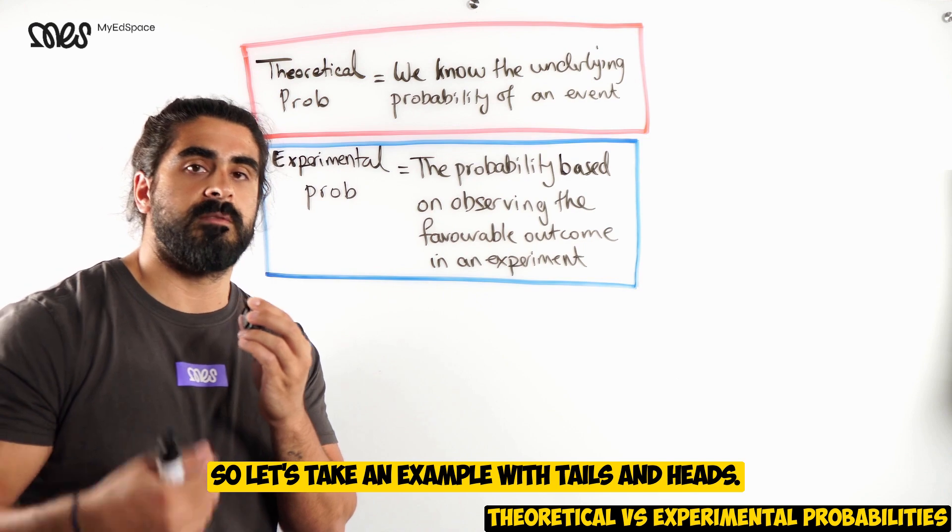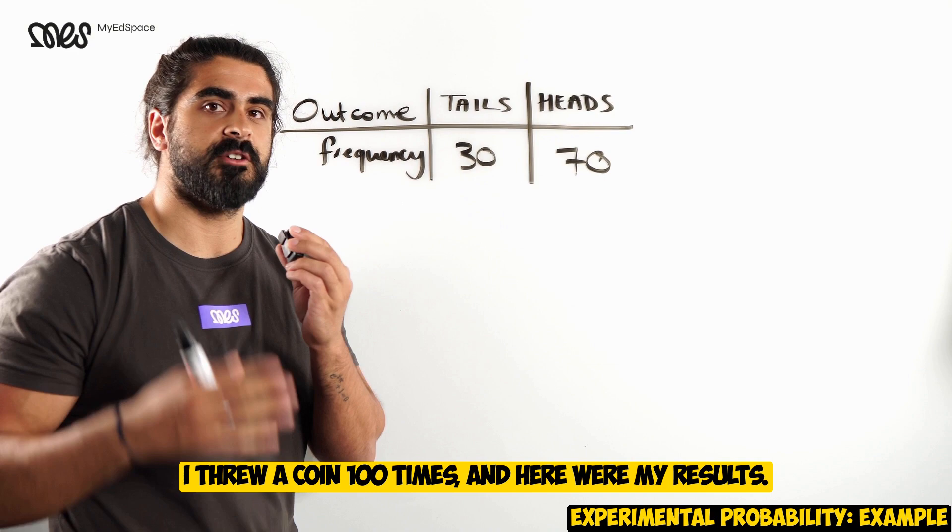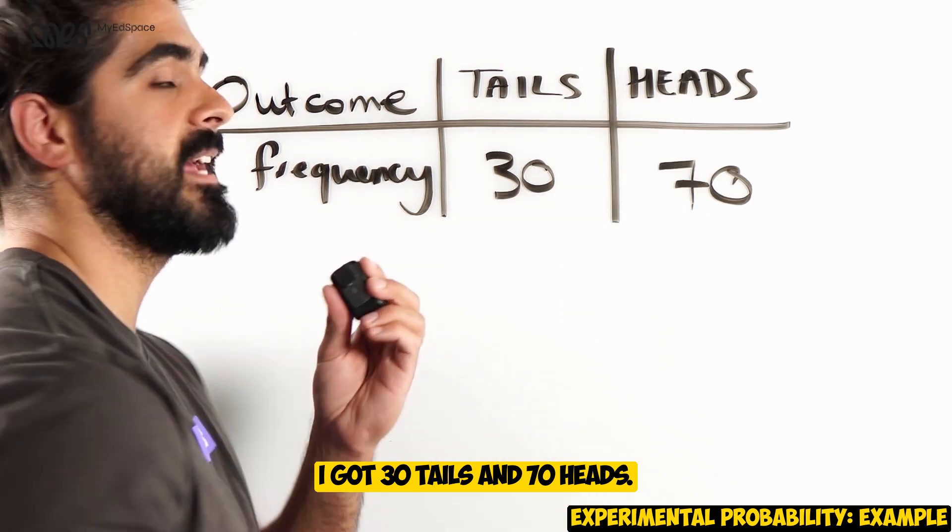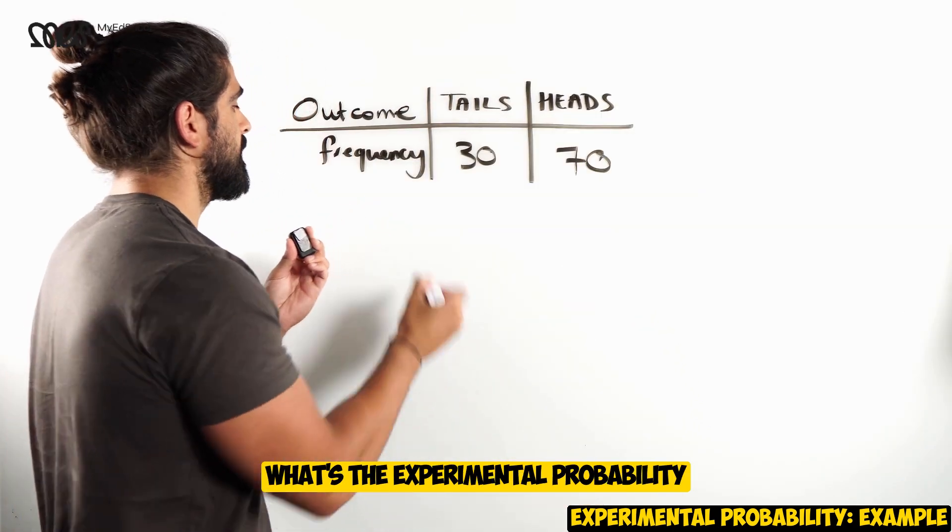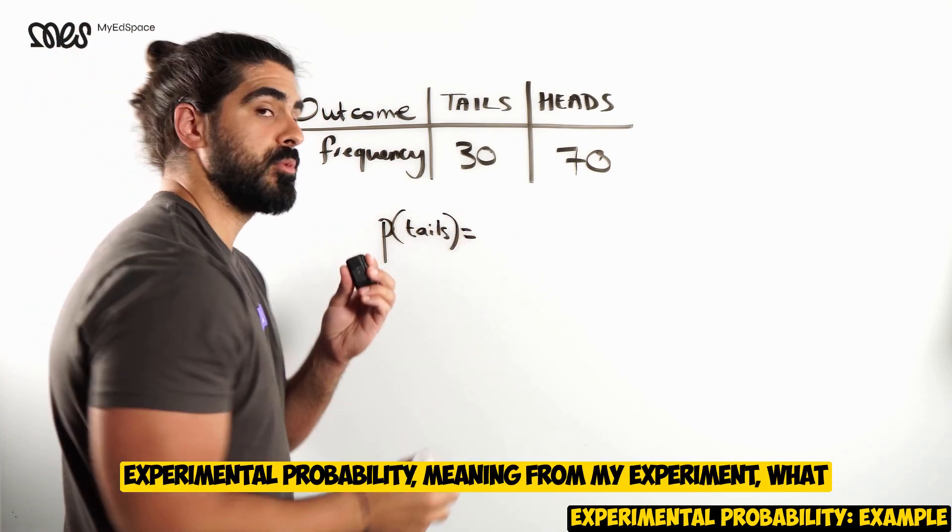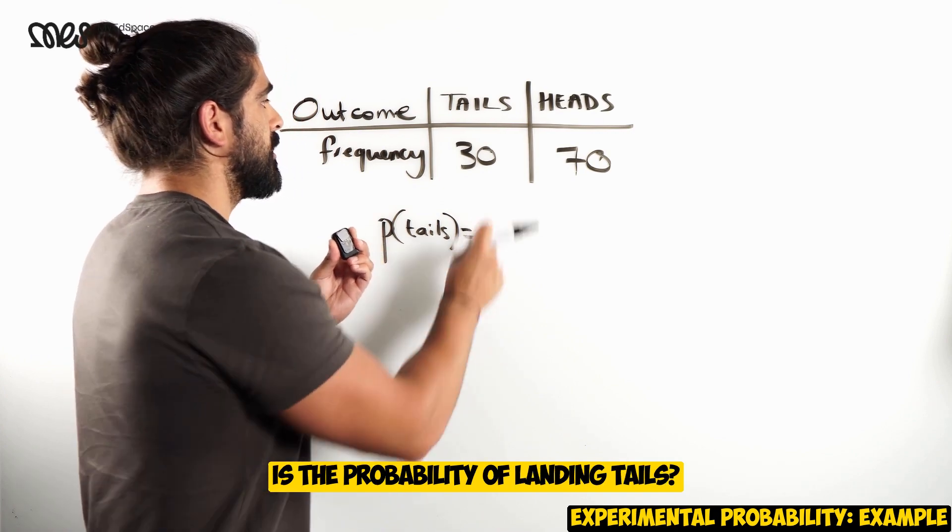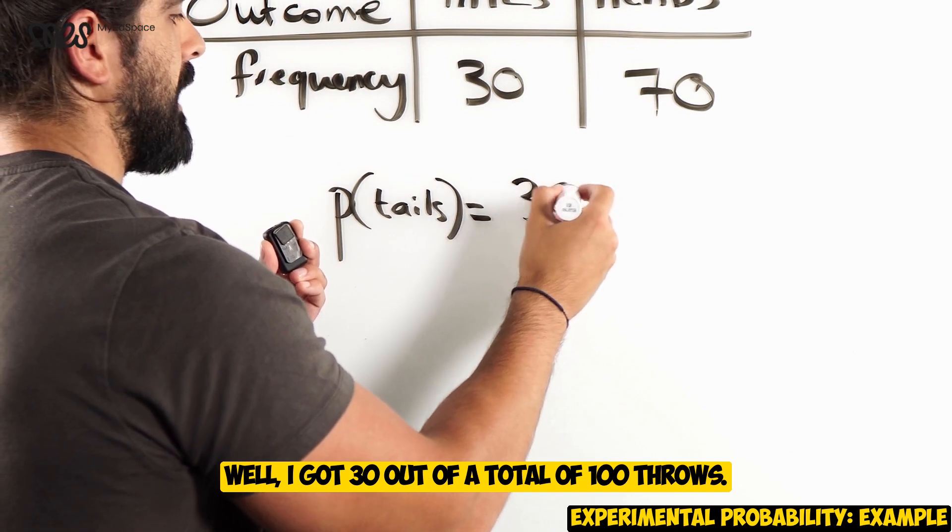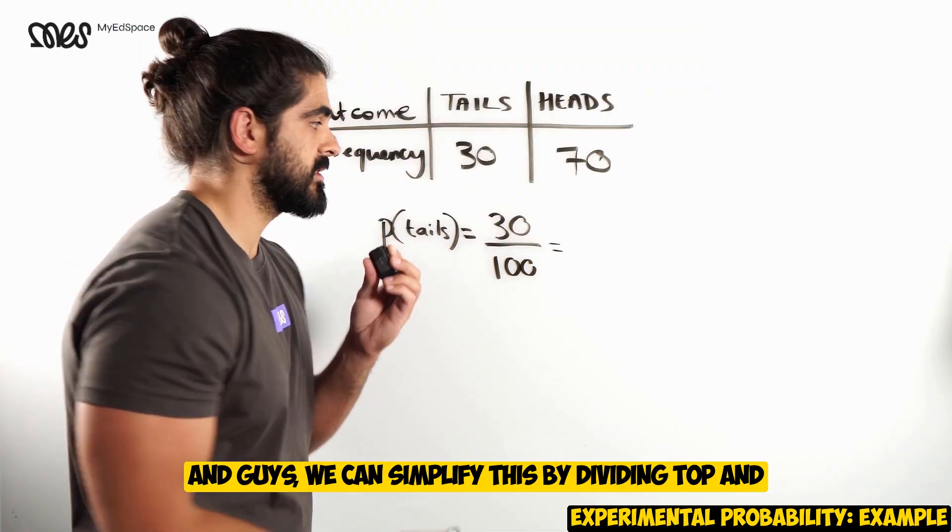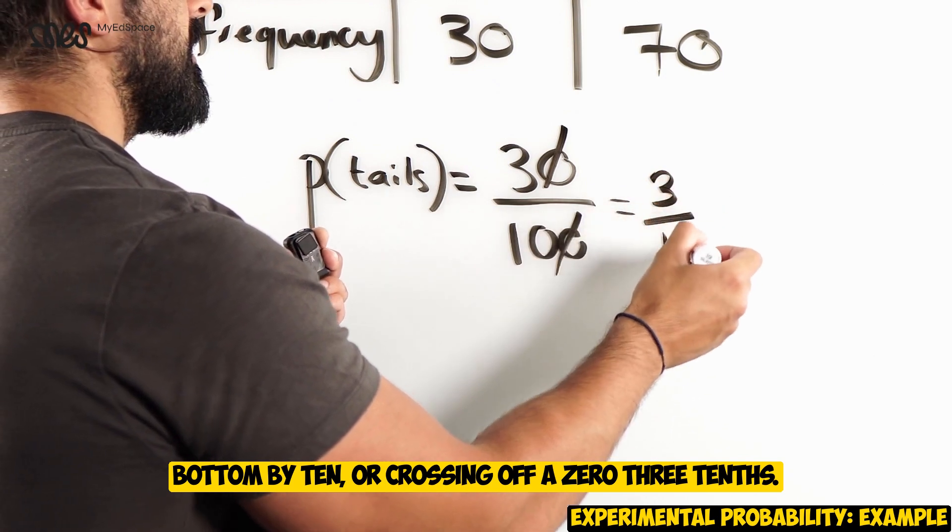Now, this is the probability based on observing the favorable event in an experiment. So, let's take an example with tails and heads. So, take a look at this example. I threw a coin 100 times. And here were my results. I got 30 tails and 70 heads. What's the experimental probability of landing tails then? Experimental probability meaning, from my experiment, what is the probability of landing tails? Well, I got 30 out of a total of 100 throws. And guys, we can simplify this by dividing top and bottom by 10 or crossing off a 0, 3 tenths.